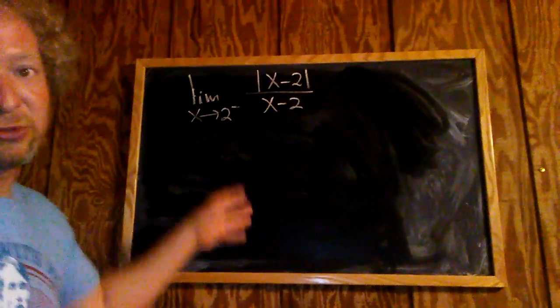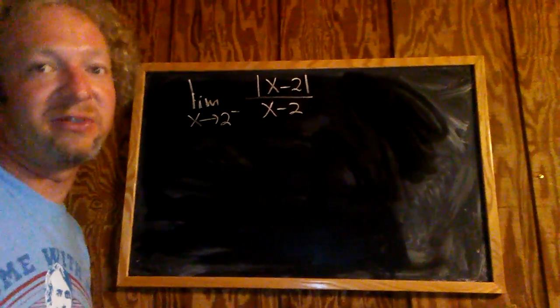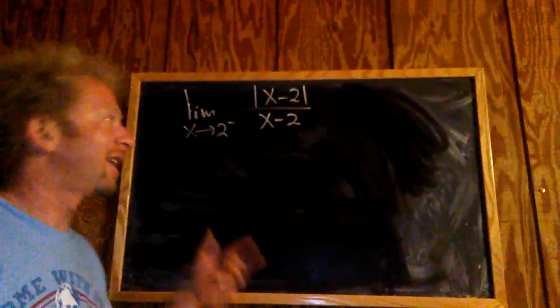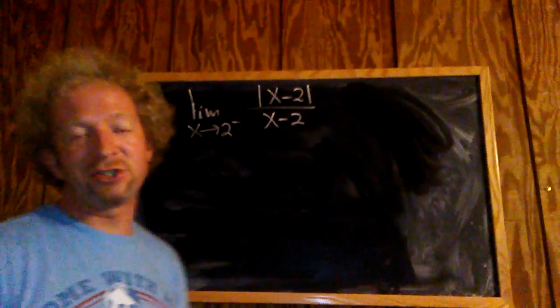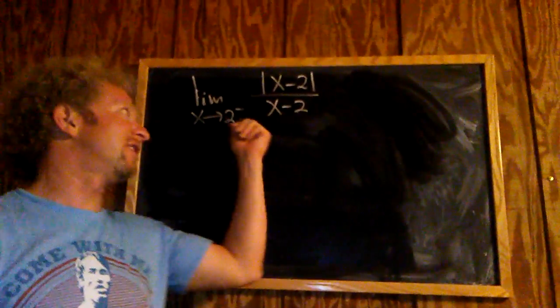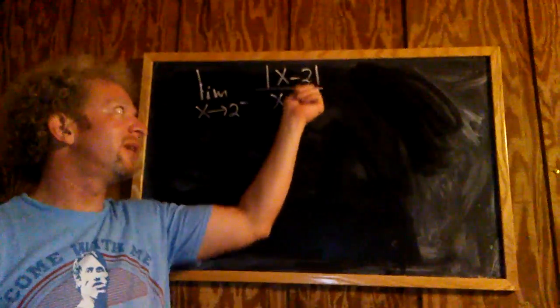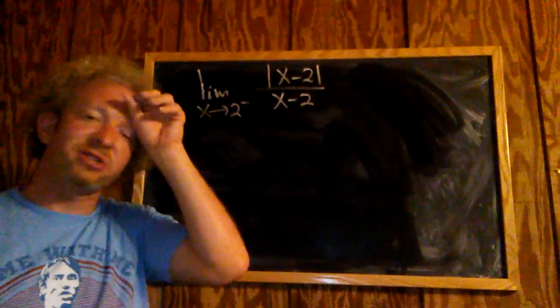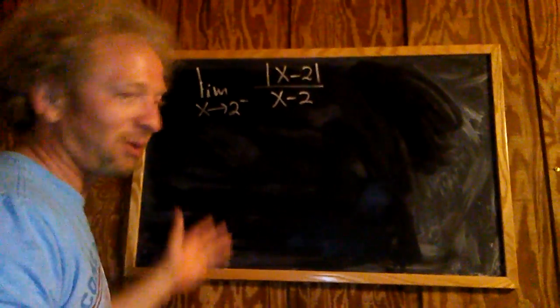Here we have a limit with an absolute value, so we have to get rid of the absolute value. When taking limits, the first thing you should always try is to plug in the numbers. If you plug in 2, you get zero on top and also zero on the bottom. You get zero over zero, which is totally undefined, so that won't work.